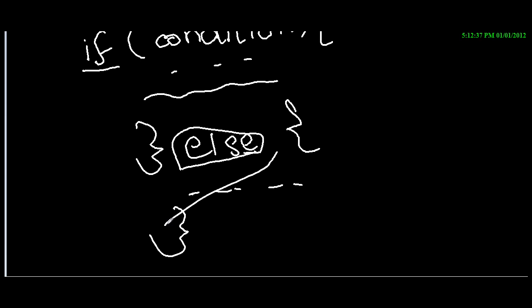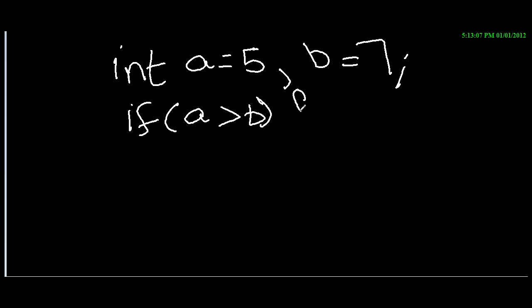Let's look at an example. Let's say you have int a equals 5, b equals 7. This is very similar to ternary operators but there is a little bit of difference which I'll show you. If a greater than b, open a brace close a brace.